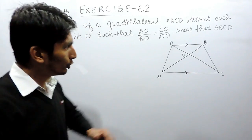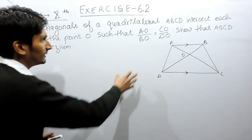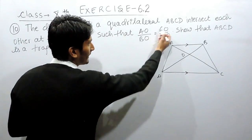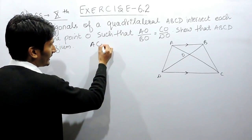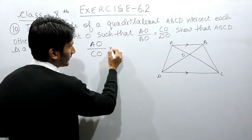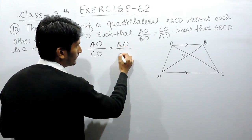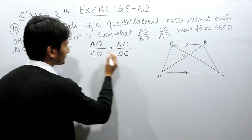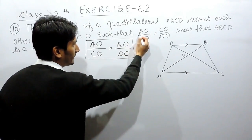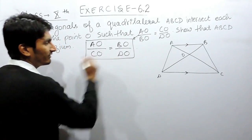Now, to prove that these two lines are parallel, we are given the ratios. If I cross multiply this, AO upon CO can be written here, and this is BO upon DO. So the given condition can be rewritten as AO/CO = BO/DO. This is given to you.